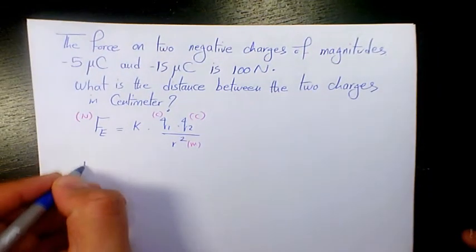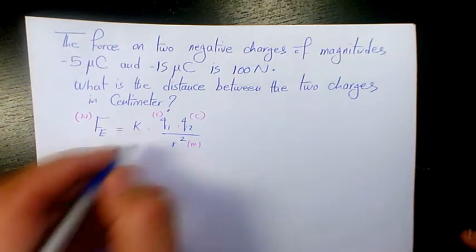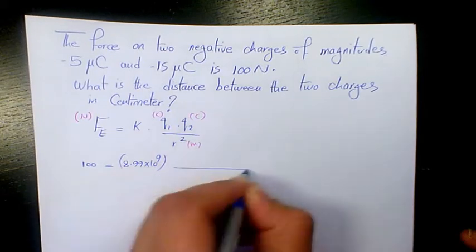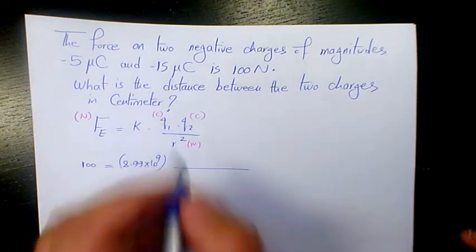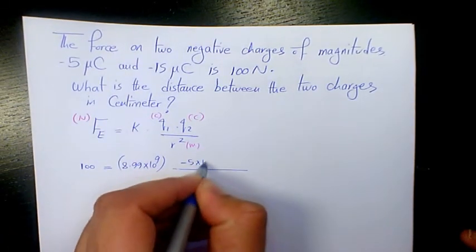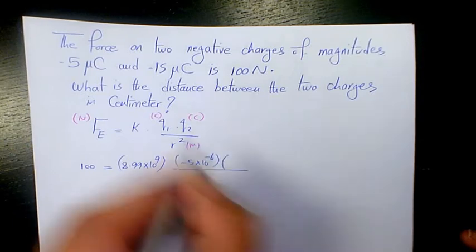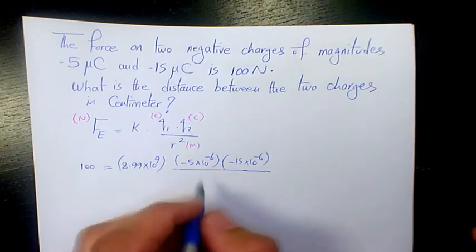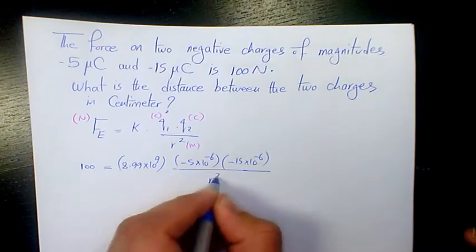We have 100 Newton. K is 8.99 times 10 to the power of 9. Q1 is -5 times 10 to the power of -6. This one is going to be -15 times 10 to the power of -6 divided by R squared, which we don't have.